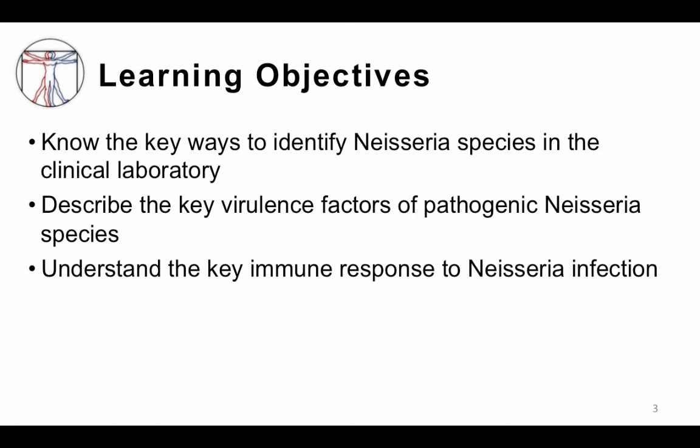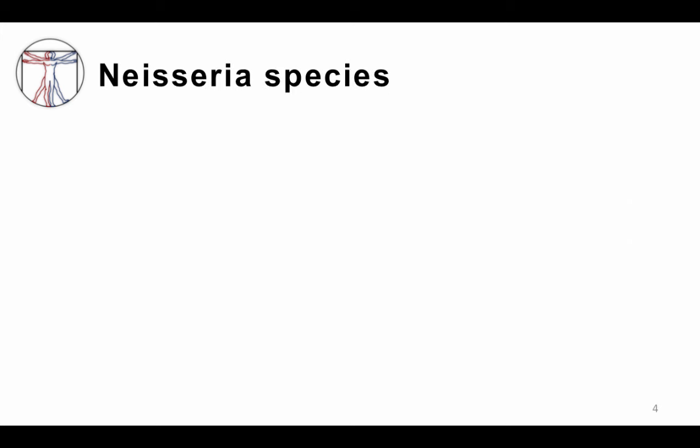The learning objectives for this session are to know the key ways to identify Neisseria species in the clinical microbiology laboratory, describe the key virulence factors of pathogenic Neisseria species, and understand some of the key immune responses to Neisseria infection.